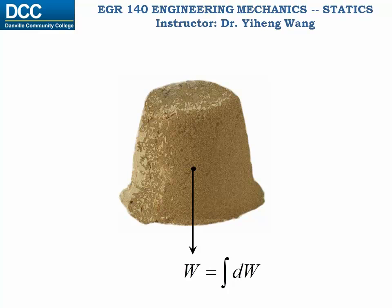We can use a concentrated weight force W to replace this distributed load, and W equals the integration of the differential weight dw. Therefore, the two load systems have the same magnitude of force. But this is not enough — they also have to create the same moment about any arbitrary axis. Therefore, this concentrated weight force must be positioned at a specified location to fully replace the distributed load as its equivalent system. This specified location is known as the center of gravity for this body, represented by point G.